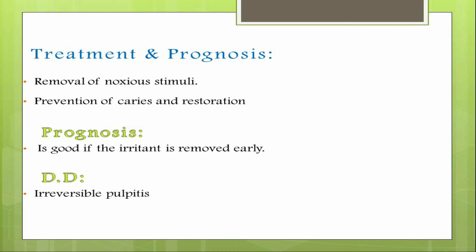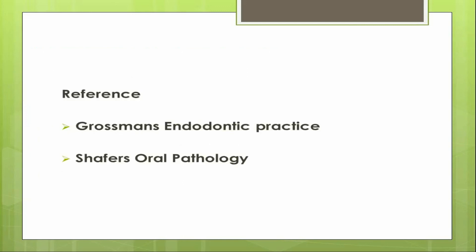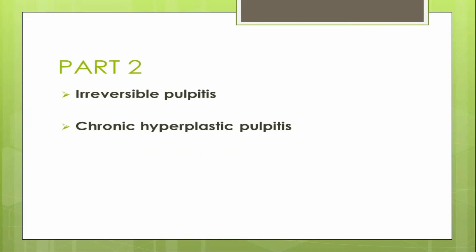The prognosis of reversible pulpitis is usually good if the irritant is removed at early stages. The differential diagnosis can be irreversible pulpitis. For further reference, you can refer to Grossman's Textbook of Endodontic Practice and Shafer's Textbook of Oral Pathology. In the next session we'll discuss irreversible pulpitis and chronic hyperplastic pulpitis, so keep watching. Thank you.